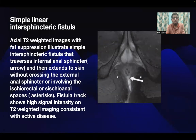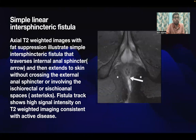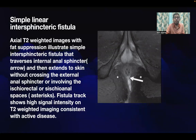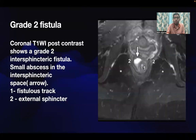This axial T2-weighted image with fat suppression illustrates a simple intersphincteric fistula that traverses the internal anal sphincter and extends to the skin without crossing the external anal sphincter or involving the ischiorectal or ischionanal space. The fistula track shows high signal intensity on T2-weighted imaging, consistent with active disease. This is a grade 2 fistula.